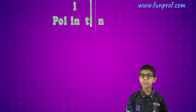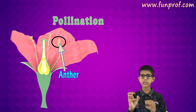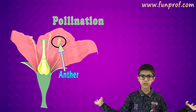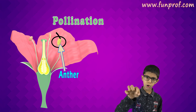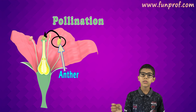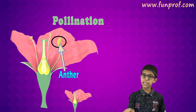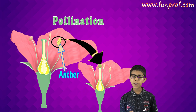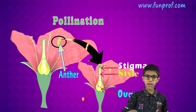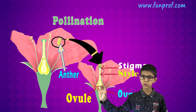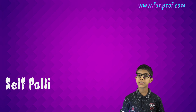Now the process of pollination: when the anther matures it splits open and the pollen grains are set free. In bisexual flowers, the pollen grains may go to the same flower's stigma. If it's a monosexual or bisexual flower, pollen can also go to another flower's stigma, and through the style it goes to the ovule. With the ovule it fertilizes and we get a fruit.